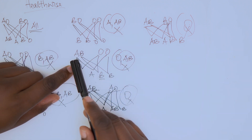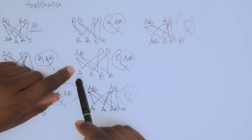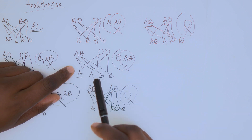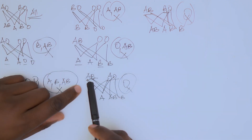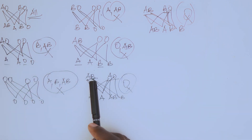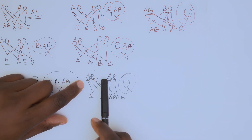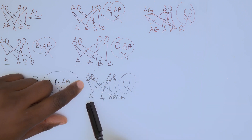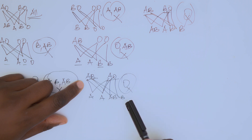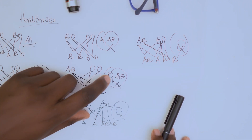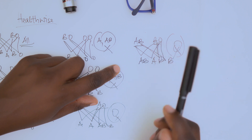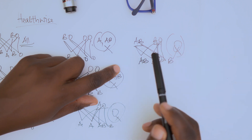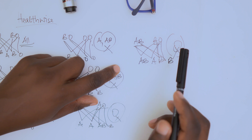If one partner is AB and the other is O, you'll find only A and B in that family — you cannot find O or AB. And if one partner is AB and the other is A, you can only find A, AB, and B — O cannot exist in that family.